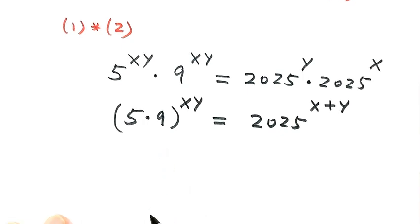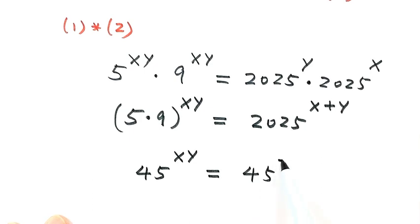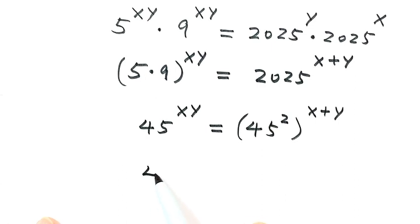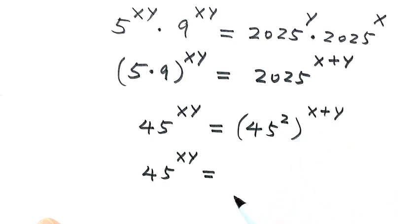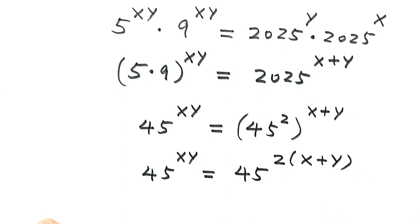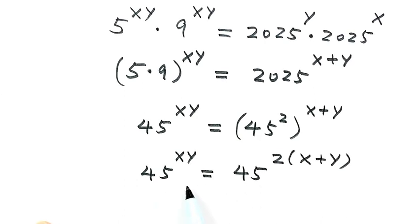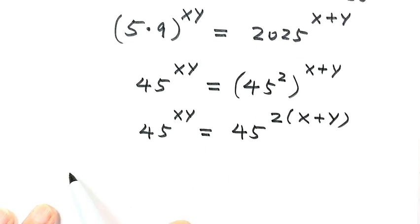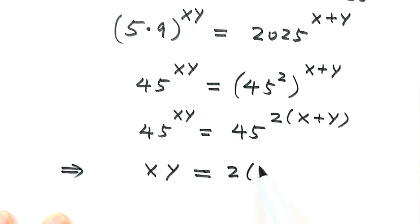Let's simplify the left-hand side: 45 to the power of xy. Then for 2025, that's 45 squared, to the power of x plus y. Now simplifying the right-hand side, we get 45 to the power of xy. Because here we have 45 squared to the power of x plus y, the two exponents multiply together, giving 45 to the power of 2 times (x plus y). Because both sides have the same base, the exponents must be equal, so xy equals 2 times (x plus y).